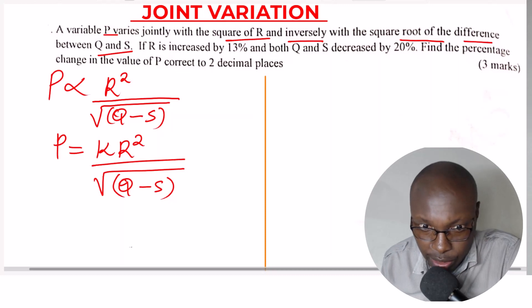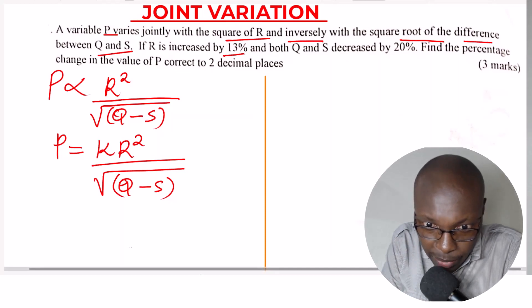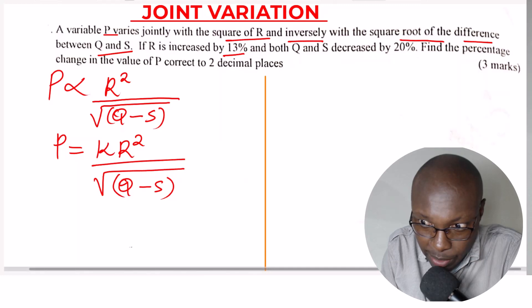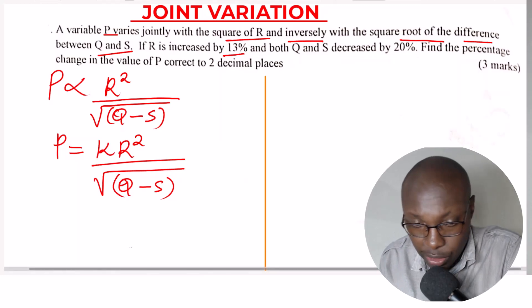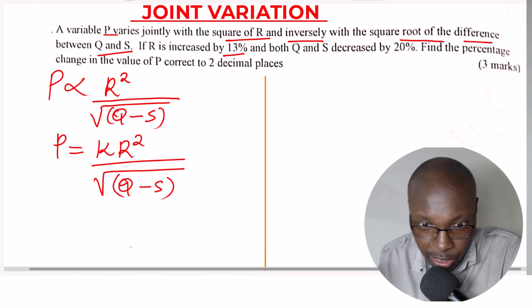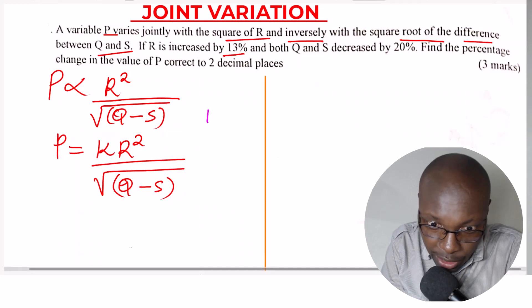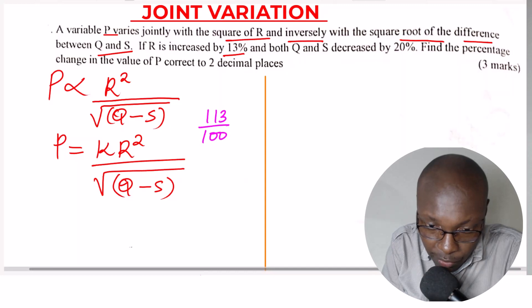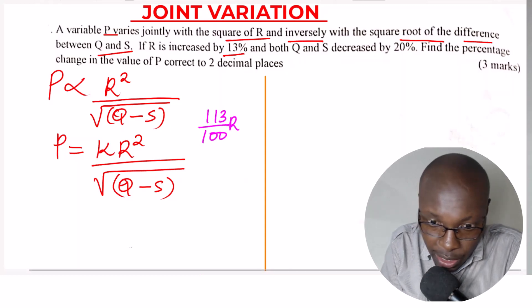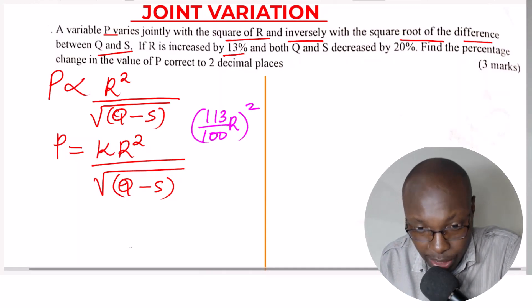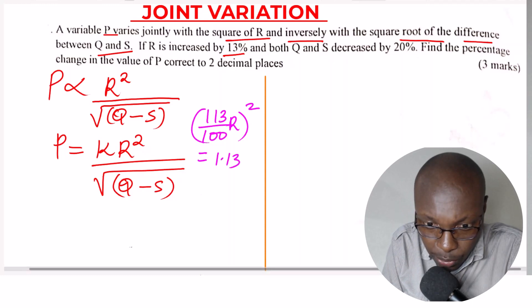Now we address the changes. If R is increased by 13 percent, the new R will be 100 plus 13, which is 113 percent — that is 113 over 100 times R, giving 1.13R. Then we square that to get the new value of R squared.